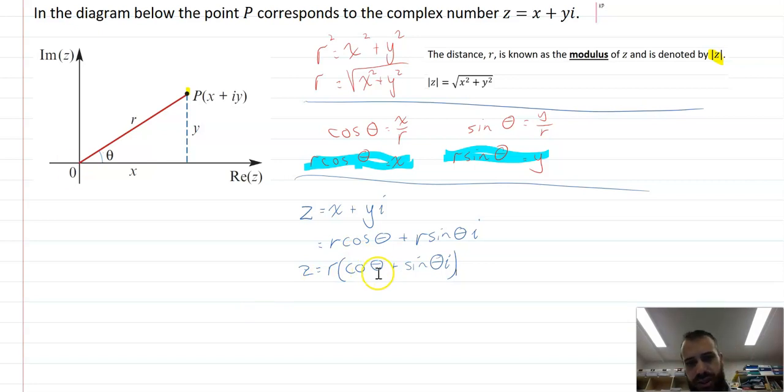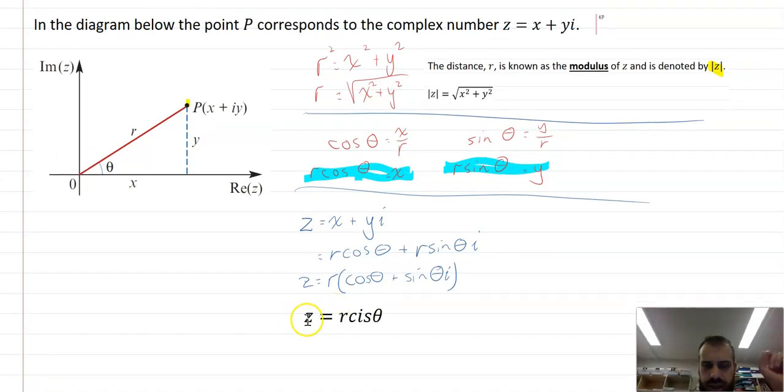Cos theta plus sin theta i. Happens so often, it's in every single one of these, that we've got a really nice little shorthand for cos theta plus sin theta i. Ta-da! I don't know where cis comes from, but there's a C in it, there's an S in it, there's an I in it, there's a C, an S, and an I in cos theta plus sin theta i. So maybe that's it. But you pronounce it cis, that's how you pronounce it. So that is polar form of a complex number.